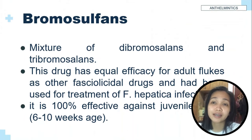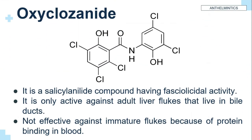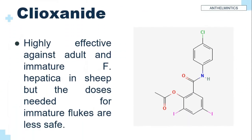Bromosulfans is 100% effective against juvenile flukes from 6 to 10 weeks of age. Oxyclozanide is a salicylanilide compound having fasciolicidal activity. In vivo, it is only active against adult liver flukes that live in bile ducts. It is not effective against immature flukes because of protein binding in blood. Clioxanide is highly effective against adult and immature Fasciola hepatica in sheep, but the doses needed for immature flukes are less safe.